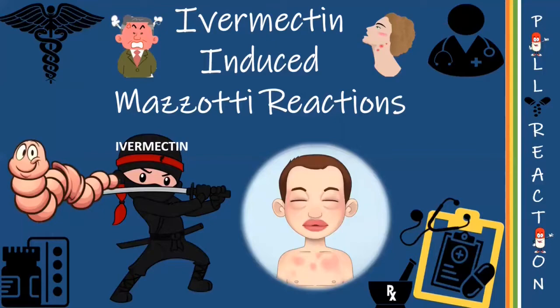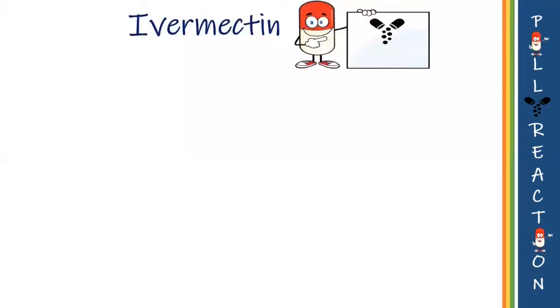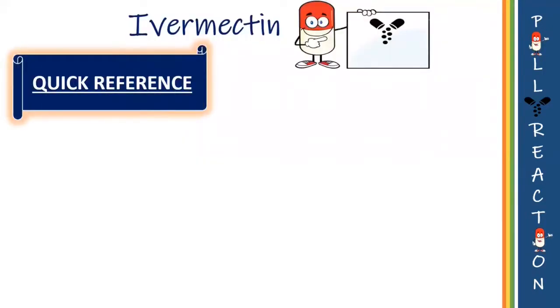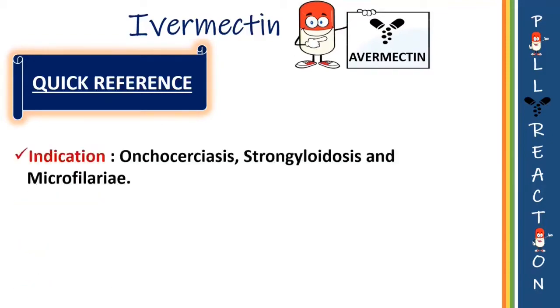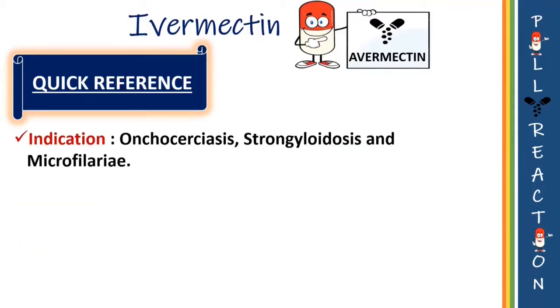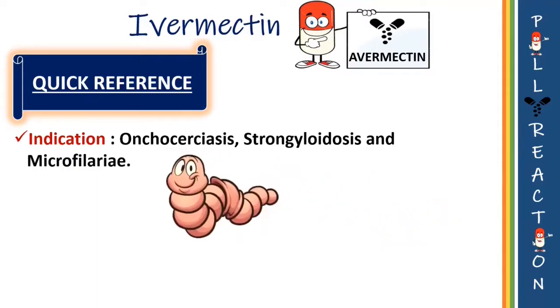To begin with, let us have a quick reference of ivermectin, also known as avermectin. The name actually indicates its function — in Latin, 'a' is without and 'vermes' is worms. Its indications include the treatment of onchocerciasis, strongyloidiasis, and microfilariae.